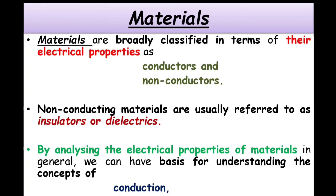Materials are broadly classified in terms of their electrical properties — basically as either conductors or non-conductors. For non-conducting materials, we usually refer to them as insulators or dielectrics. By analyzing the electrical properties of these materials, we can have a basic understanding of concepts like conduction in that material, electric current, and how the polarization of that material occurs.